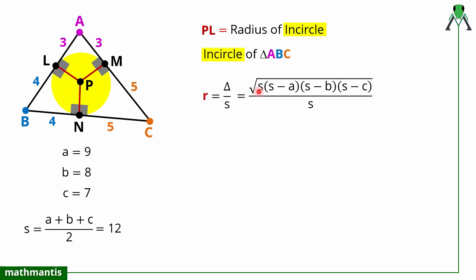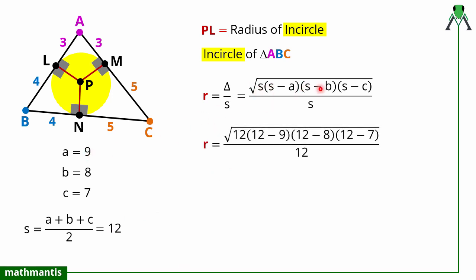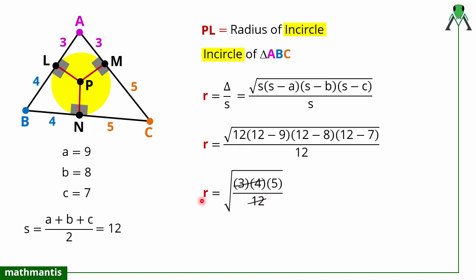Using Heron's formula, the area Δ = √(s · (s−a) · (s−b) · (s−c)) = √(12 · (12−9) · (12−8) · (12−7)) = √(12 · 3 · 4 · 5). Simplifying: 12 and the product 3 · 4 = 12 cancel, leaving √(12 · 3 · 4 · 5 / 12) under the inradius calculation. So r = Δ/s = √(12 · 3 · 4 · 5) / 12 = √5. The answer is PL = √5.